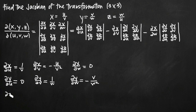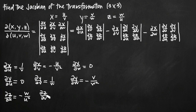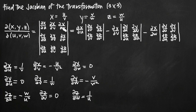The partial derivative of z with respect to u gives us negative w over u squared. The partial derivative of z with respect to v is 0, because there is no v in our z equation. And the partial derivative of z with respect to w is just 1 over u. So those are all of our partial derivatives.